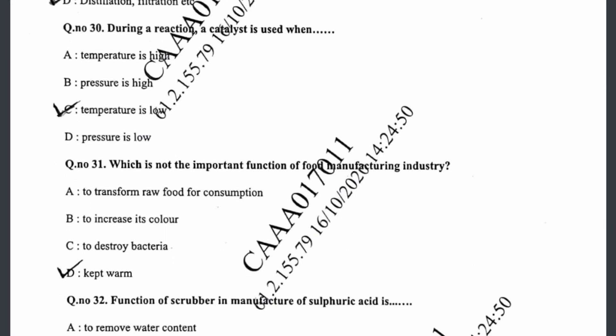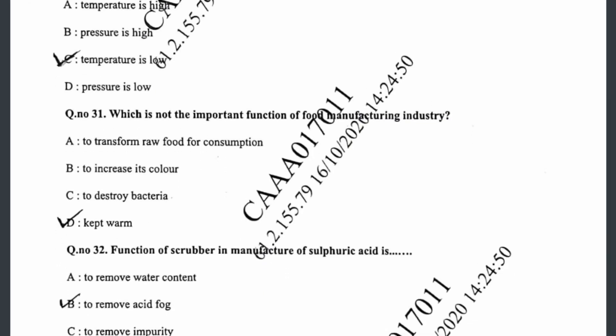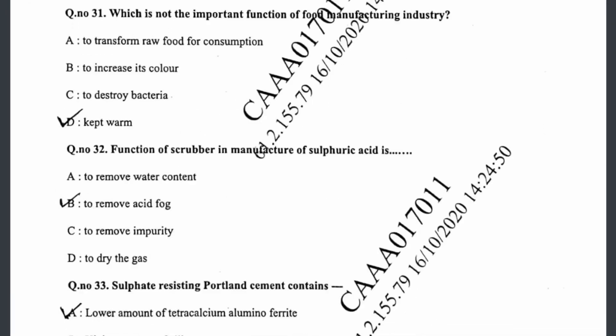Question thirty-one: which is not an important function of the food manufacturing industry — the answer is option D, 'kept warm,' as that is not an important function. Question thirty-two: the function of a scrubber in the manufacture of sulphuric acid is to remove acid fog.